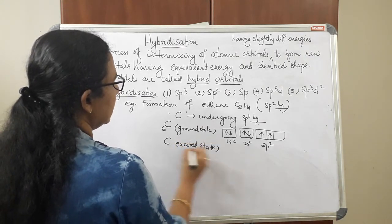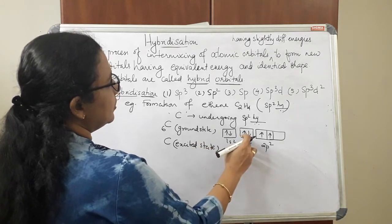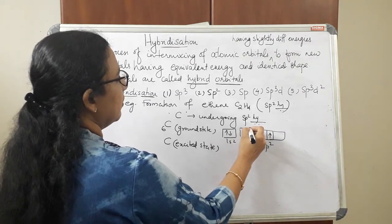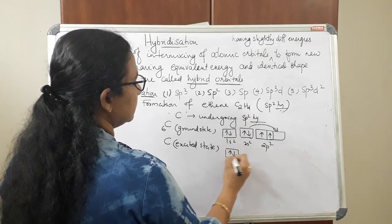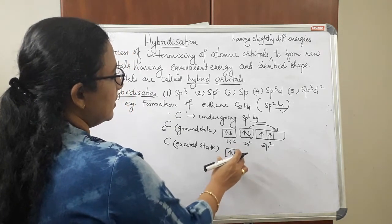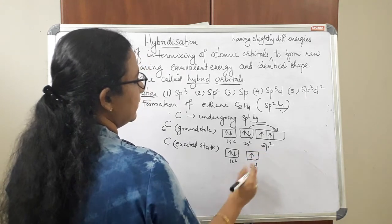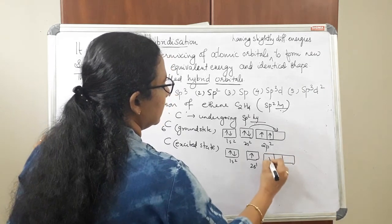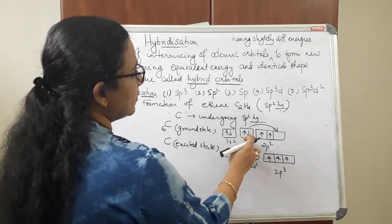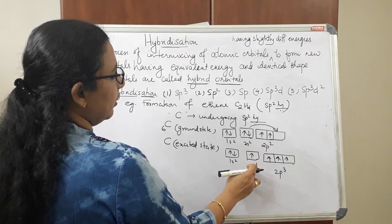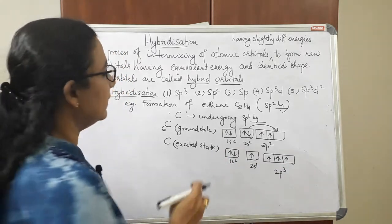Before hybridization, the electrons in the carbon atom are excited. Excitation takes place from the 2s orbital to the 2p level — that means one electron from 2s is promoted to 2p. So the excited state electronic configuration becomes 1s2, 2s1, and 2p3.